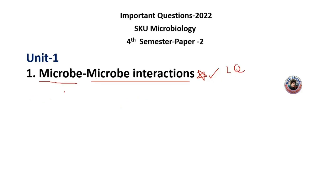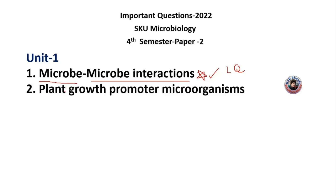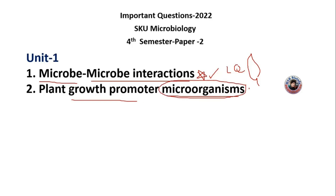The second important question is the plant growth promoter microorganisms — that is, the role of microorganisms as plant growth promoters, which will require a long answer. The third important question is plant pathogens, which means plant diseases and pathogens.